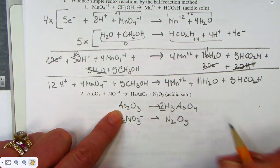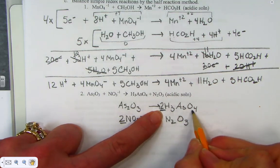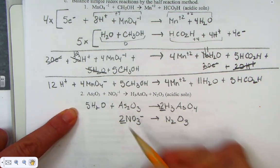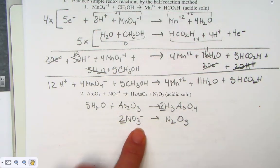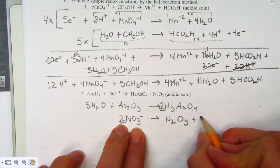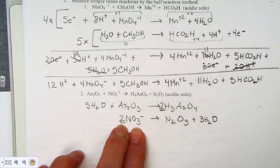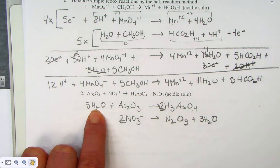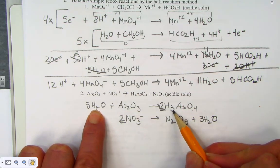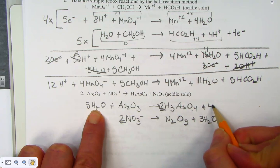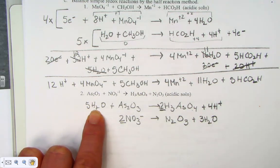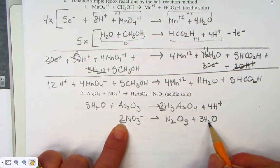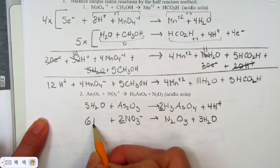Let's count the oxygens. 2×4 = 8 oxygens on the right of the first half-reaction, so I add 5 waters to the left. For the second, 2×3 = 6 oxygens, so I add 3 waters. Now balance H's: 5×2 = 10 H's on one side, 2×3 = 6 on the other, so we need 4 more protons for the first half-reaction. For the second: 3×2 = 6 H's on the right, none on the left, so we add 6 protons.